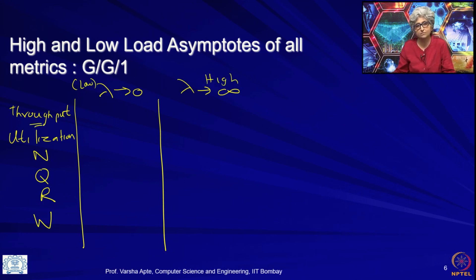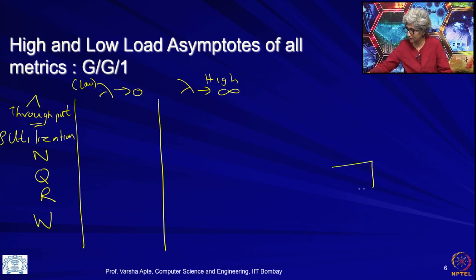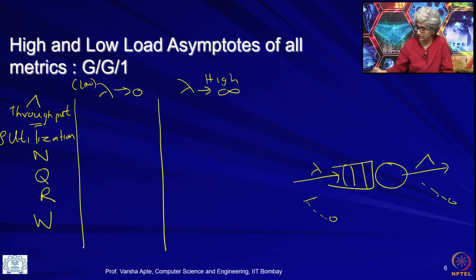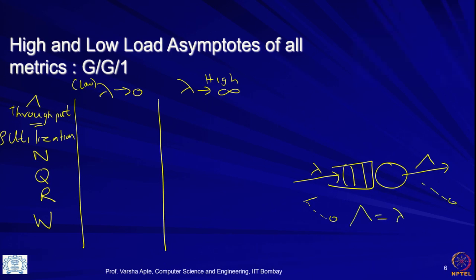What happens to a queuing system if the arrival rate goes to 0 — what happens to the throughput? Obviously, if lambda is itself going to 0, throughput will also go to 0. Capital lambda the throughput is just going to be equal to the arrival rate small lambda. So if the arrival rate is going to 0, throughput will also go to 0 — if there is no work coming into the system then there is no work the system can produce.